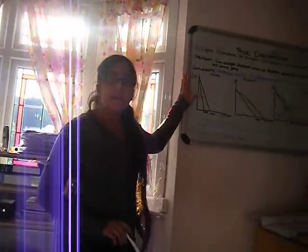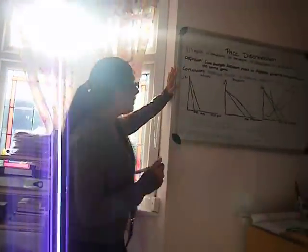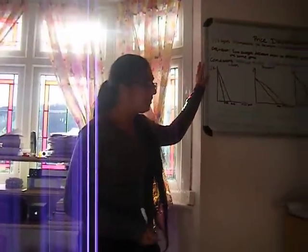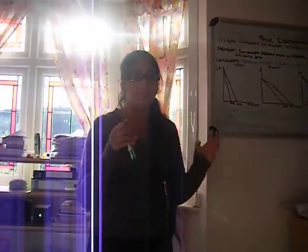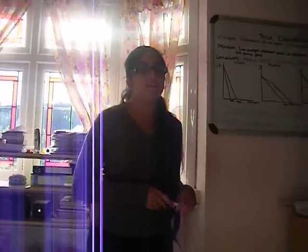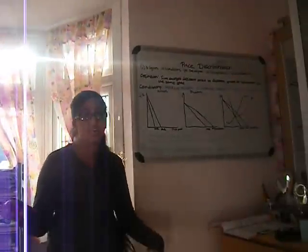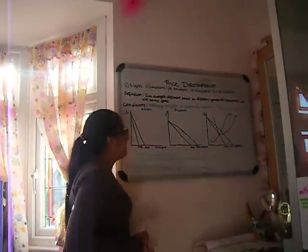The adult market is going to be inelastic because adults earn money and they're able to pay for the price. Students have an elastic market because if the price goes up by 2%, they're likely to go somewhere else because students can't afford it. That's why they have an elastic demand.